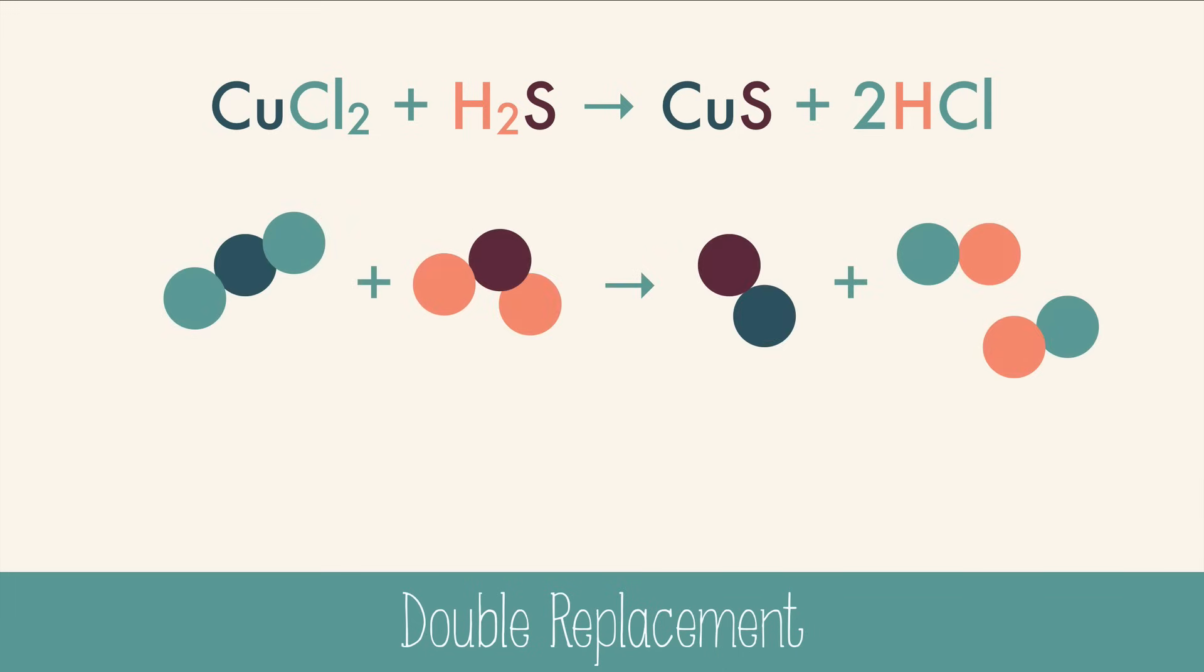So here we have an equation, a drawing, and now a simple formula for double replacement reactions. AB plus CD yields AD plus CB. You can see from this equation that A and C have just switched places, and those represent the positive ions.